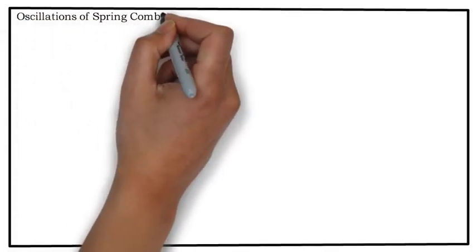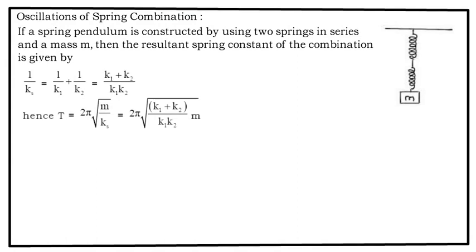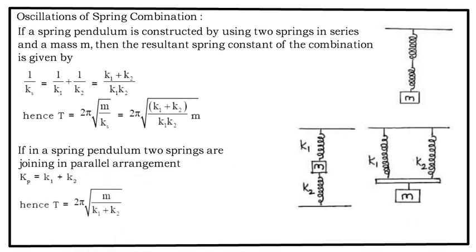Oscillations of spring combination. If the springs are in series, the resultant K would be 1/Ks = 1/K1 + 1/K2, that is (K1+K2)/(K1·K2). So the time period of oscillation T equals 2π√(M/Ks), which is 2π√(M(K1+K2)/(K1·K2)). If in the spring pendulum two springs are joined in parallel arrangement, Kp equals K1 plus K2. So the resultant time period T equals 2π√(M/(K1+K2)). These rules are applicable for horizontal motion of spring mass systems too.